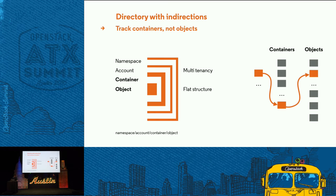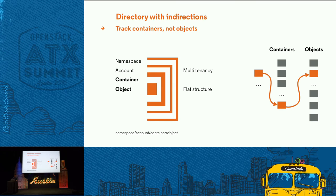The main idea is the directory. You don't want to track objects directly because there are billions of them, so what we do is track containers. Containers are a huge index and you can have millions of them on the same cluster — and containers track objects. The structure is flat; you can't have a container on top of another. It's flat, like Amazon S3 buckets or Swift containers.